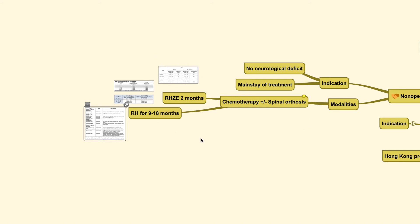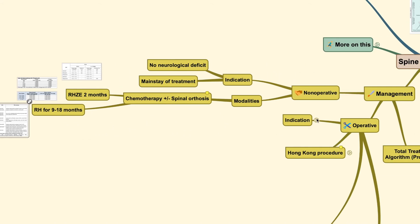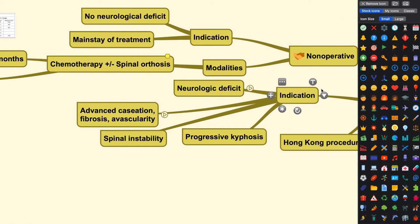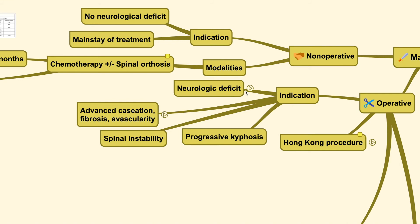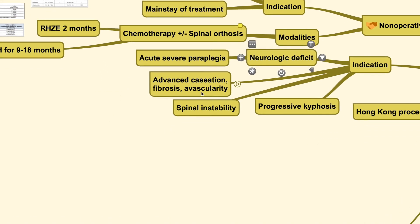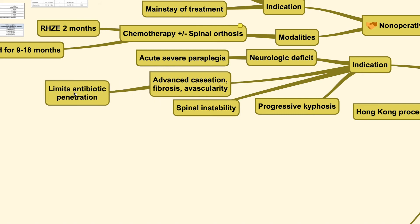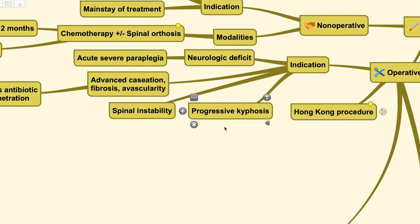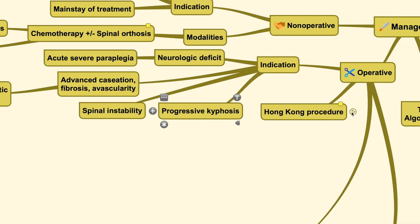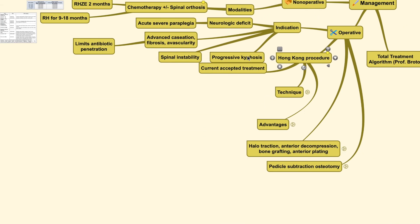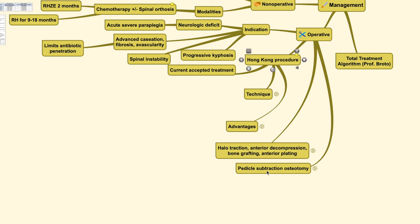The operative treatment method is usually indicated when a neurologic deficit is found, especially in cases of acute severe paraplegia, or in cases where there is advanced caseation, fibrosis, and avascularity, because these factors may limit the antibiotic's ability to penetrate and clear the infection. Indications also include spine instability and progressive kyphosis. Surgical techniques include the Hong Kong procedure, halo traction anterior decompression, bone grafting and plating — usually reserved for cervical problems — and osteotomy for severe kyphosis requiring correction.